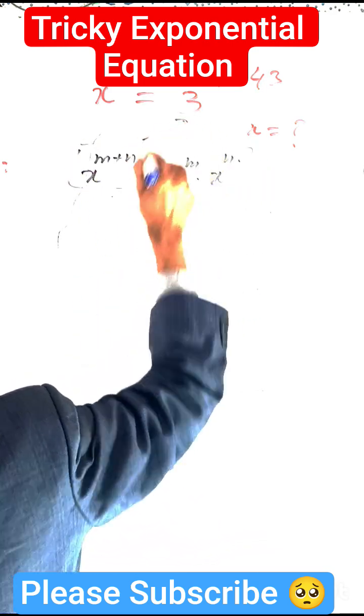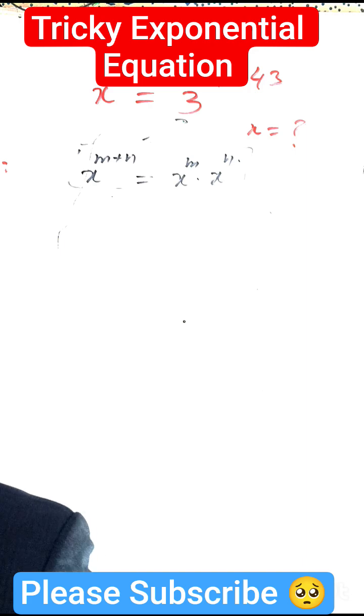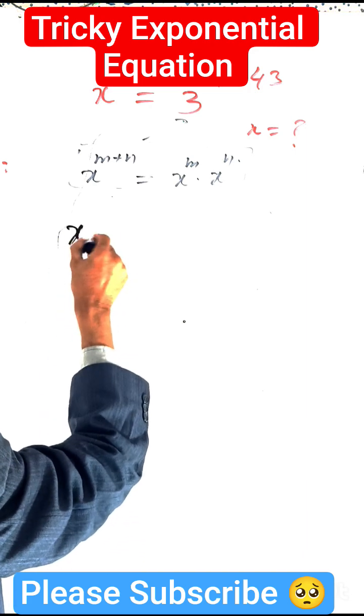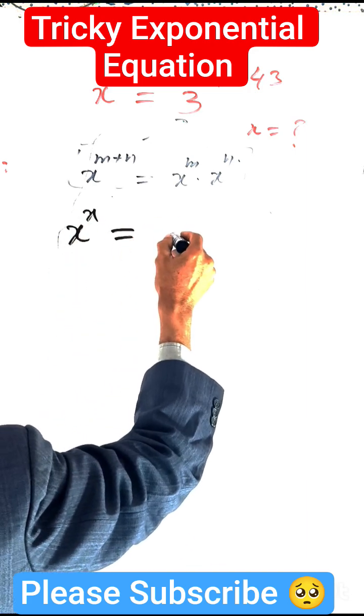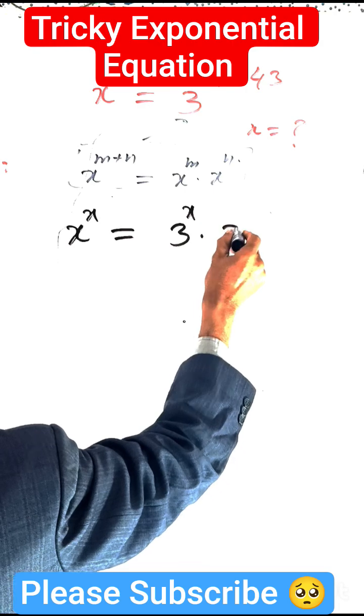According to this rule, we simplify this term. So here x exponent of x is equal to 3 exponent of x and 3 exponent of 243.